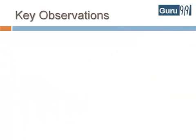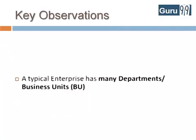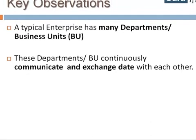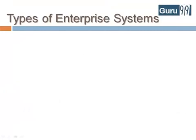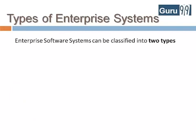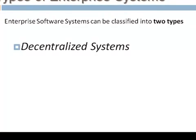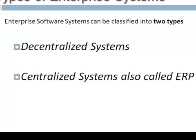Some key inferences one could derive from the scenario: a typical enterprise has many departments or business units. These departments continuously communicate and exchange data with each other. The success of any organization lies in its effective communication and data exchange within these departments, as well as associated third parties such as vendors, outsourcers, and customers. Based on how communication and data exchange is managed, enterprise software systems can be broadly classified as decentralized systems or centralized systems, which are also called ERP. Let's look at decentralized systems first.